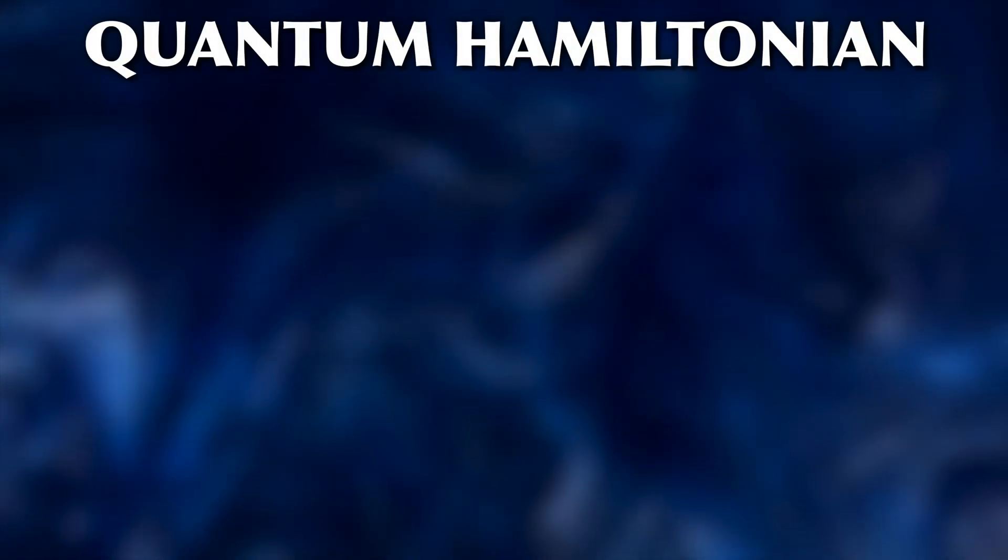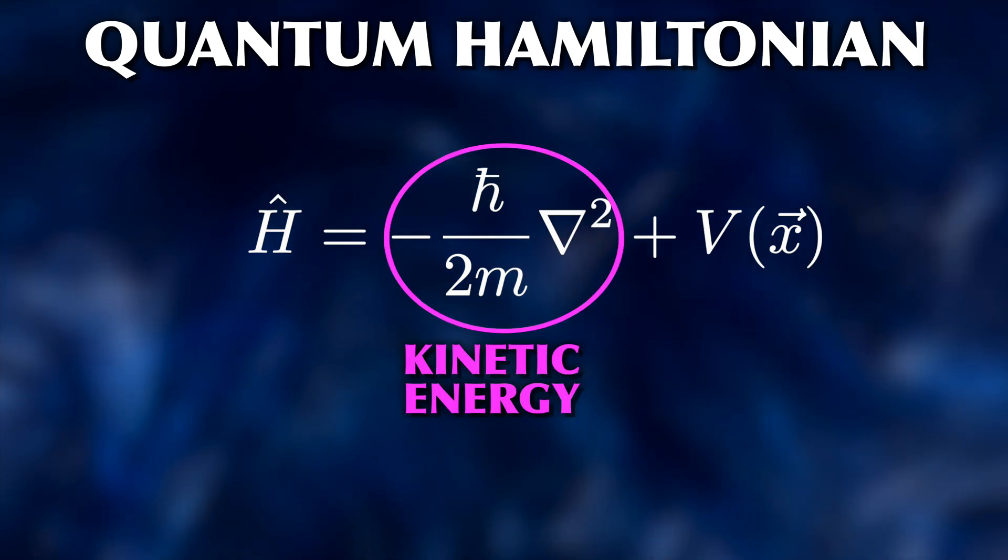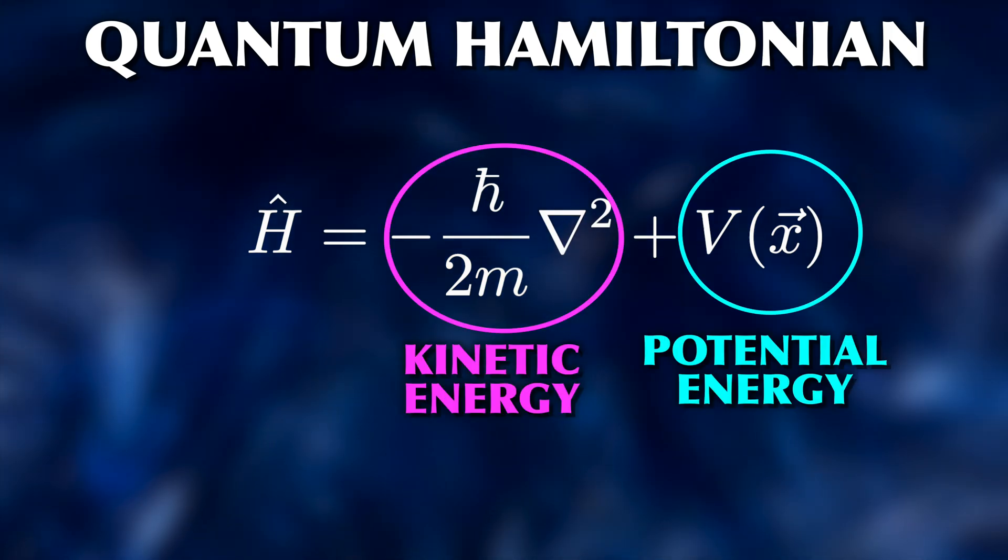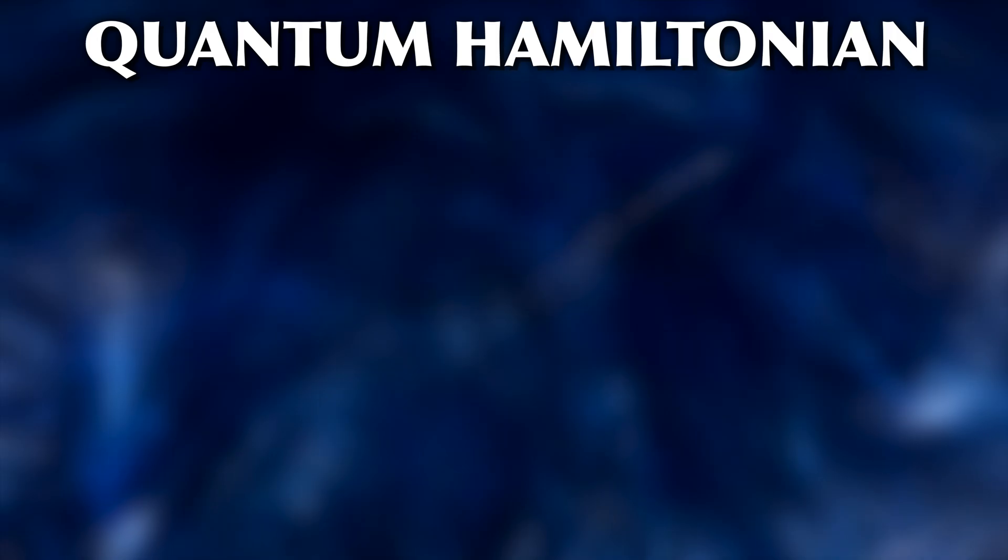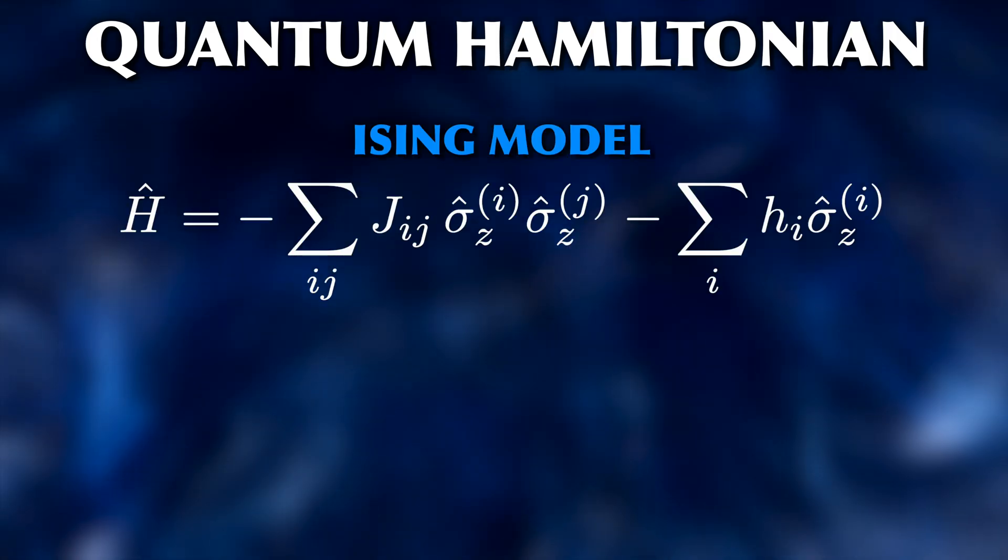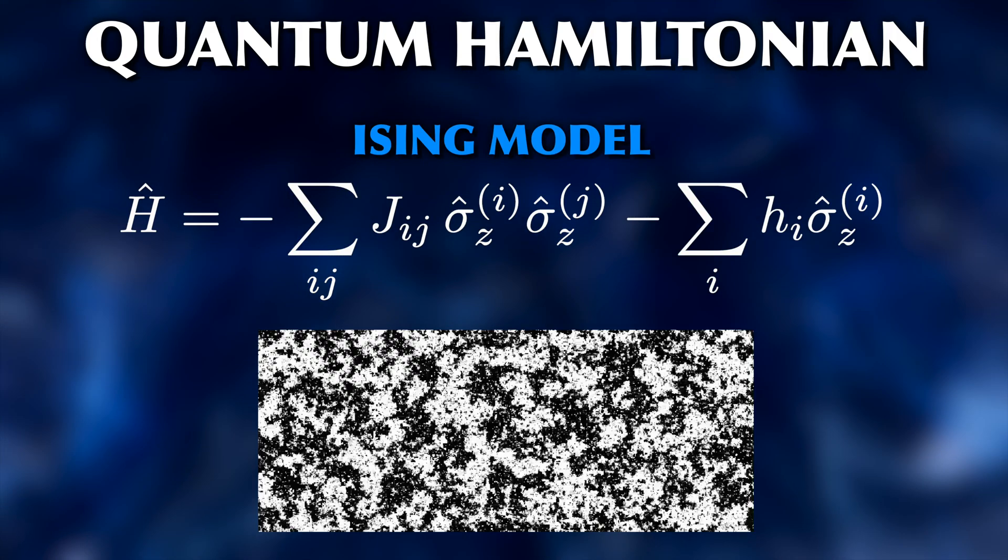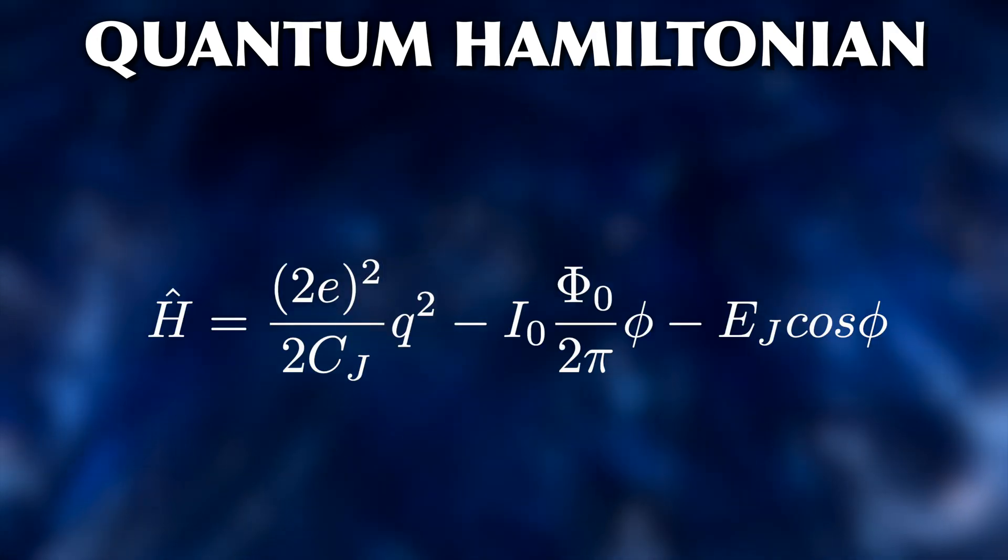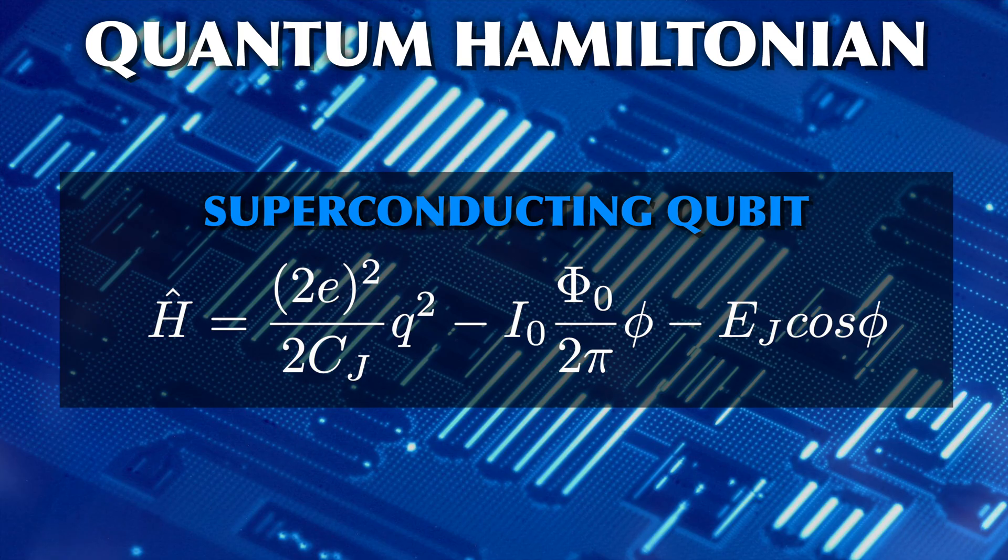In the simplest case, it looks like this, where the first term gives the kinetic energy and the second term the potential energy. Or this is the Hamiltonian of the Ising model, which describes magnetism in solids. And this is the Hamiltonian for a qubit in a superconducting quantum computer.